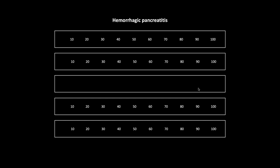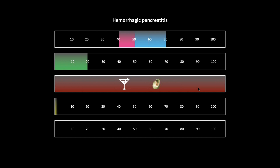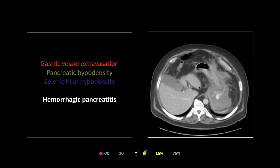Next: hemorrhagic pancreatitis. Data for this as a distinct entity didn't exist, so I'm using general pancreatitis data. It affects women aged 40 to 60 — associated with gallstones — and men aged 50 to 70 — associated with alcohol — hence the different age ranges. Incidence is 20 per hundred thousand, making pancreatitis fairly common. Mortality is about 15 percent. CT sensitivity for straight pancreatitis is only about 75 percent — you can have a normal CT and still have pancreatitis.